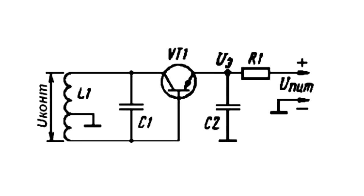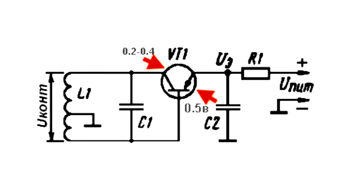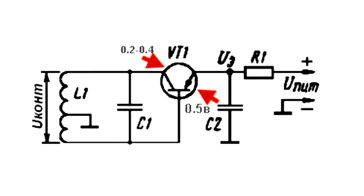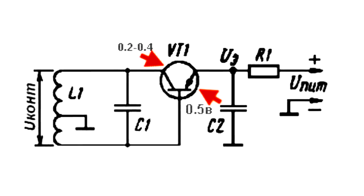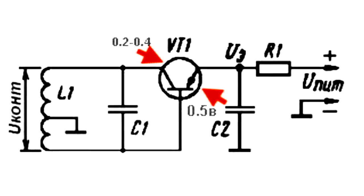The DC voltage at the base is the same as the voltage at the collector. A transistor, especially one made of silicon, can easily work in this mode. The voltage at the base, relative to the emitter, is about 0.5 V, and the saturation collector-emitter voltage is within the range of 0.2 to 0.4 V, depending on the transistor type.